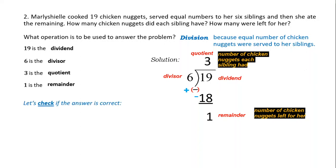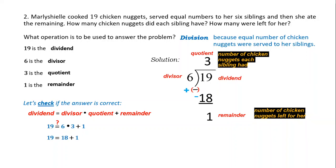Let's check. To check the answer in division, multiply the divisor by the quotient and add the non-zero remainder. The remainder here is not zero, so it makes a difference. Order of operation: 6 times 3 equals 18, then add 1 — that is 19. The answer is correct if both sides of the equation are equal.